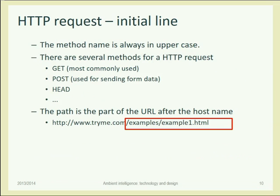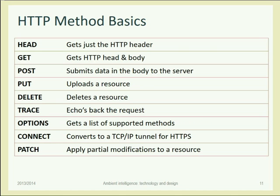What we're more interested in today is the command and the resource, because we want to use these commands and resources to do something different from retrieving web pages. The first word of the first line of every HTTP request is always one of the HTTP methods. We already know that most requests use the GET method. GET is a request for retrieving a copy of a resource on a different server - usually an image or an HTML page. We name the resource we want, like slash index.html, and the GET method retrieves a representation of that resource.